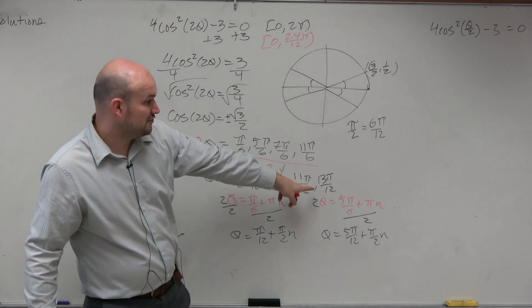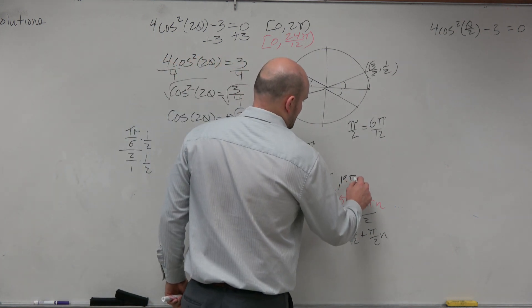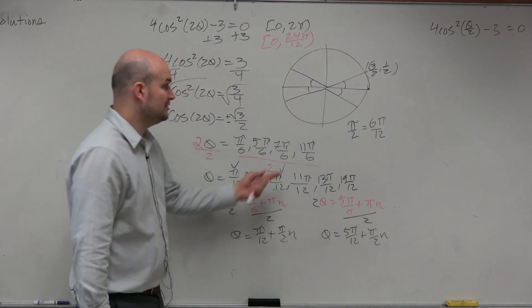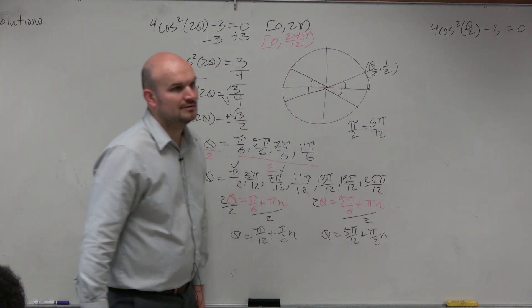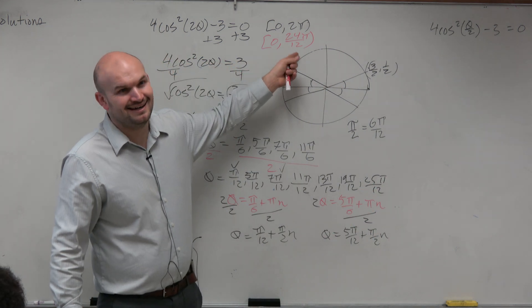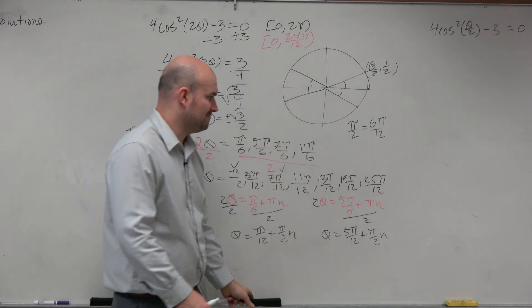So if we add 6 pi over 12 again, we get 19 pi over 12. Can we do it again? Yes. Sure, why not? 25 pi over 12. Ah, uh-uh, right? That's above 2 pi. So 25 pi doesn't work.